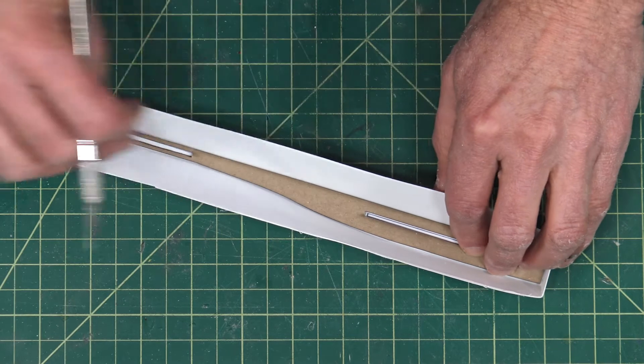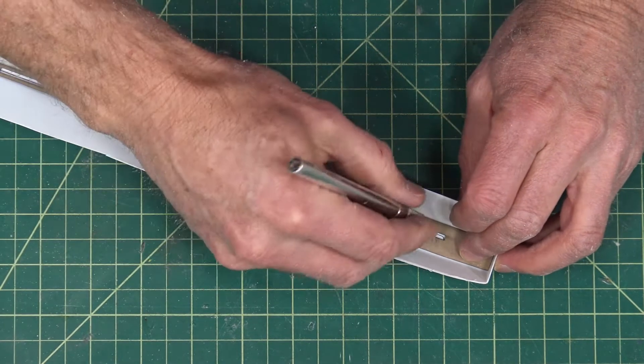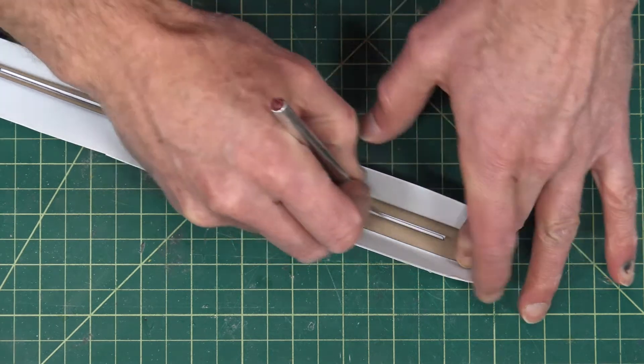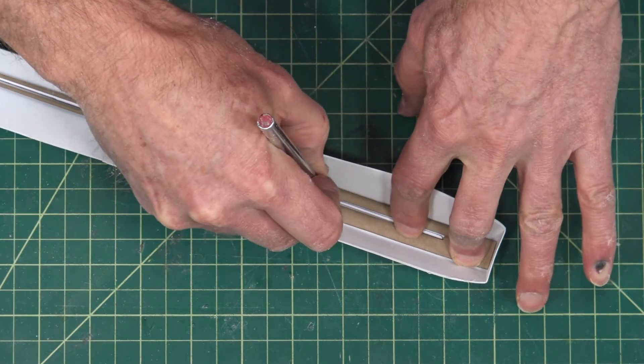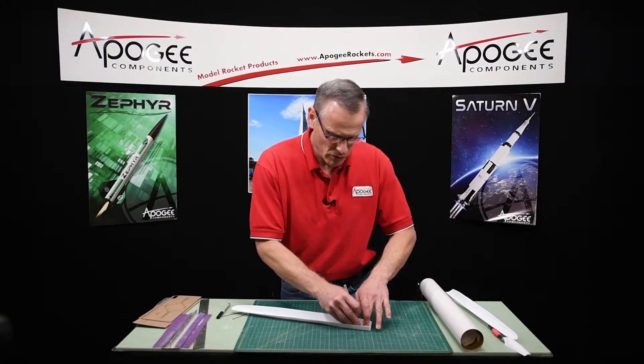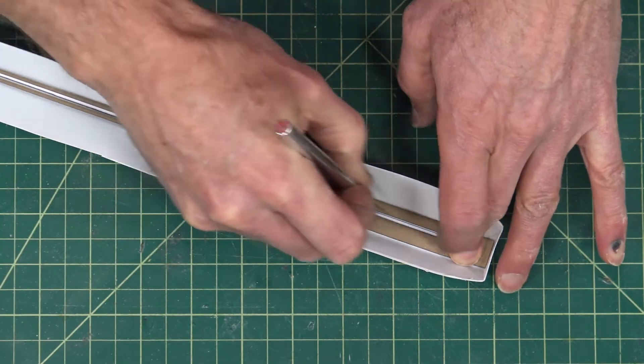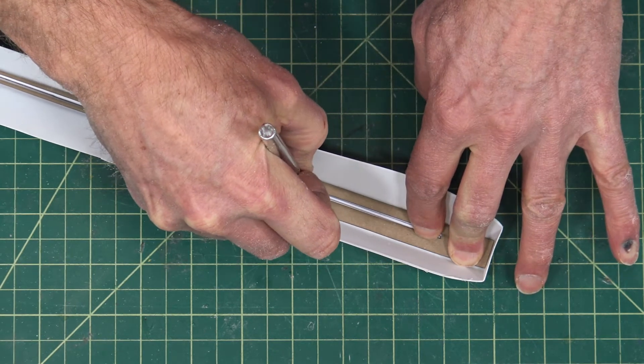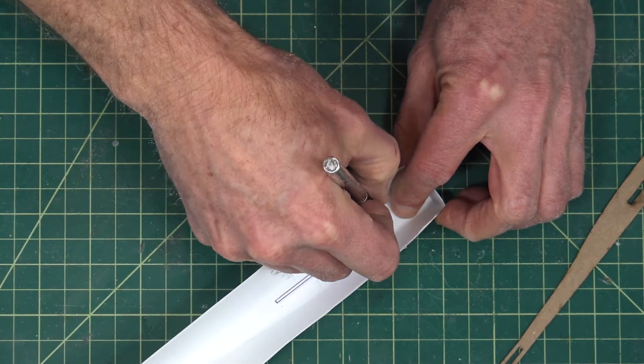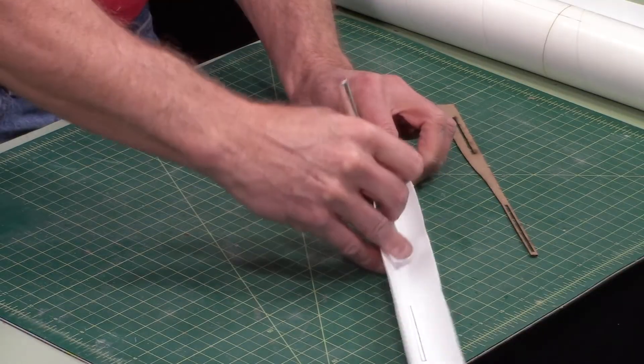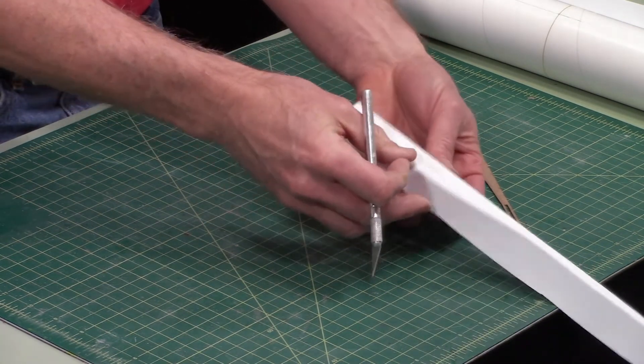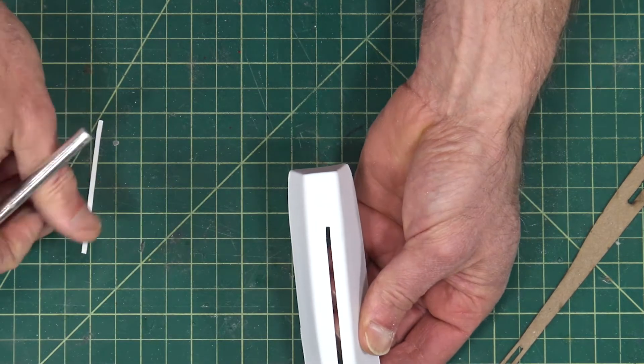So as before, try to not cut all the way through at one time. You can make several light passes to get a nice groove in there for your knife to follow. And you'll feel it when it goes through. You can see from the back side, it's starting to come through. Once it starts to come through, it'll be fine.